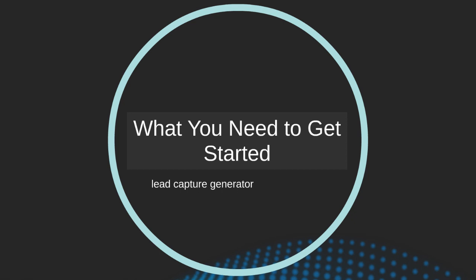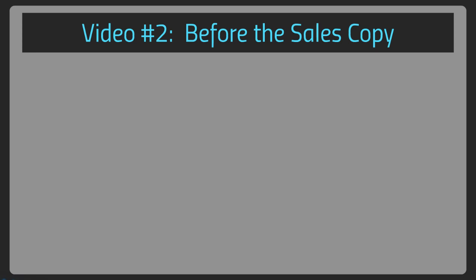Before we end this video, I want to talk about what you need to get started. You really need a lead capture generator — the ability to create lead capture pages — and you need to connect that to some sort of autoresponder like GetResponse.com or AWeber.com. Now let's move on to video number two and talk about what you need before sales copy.